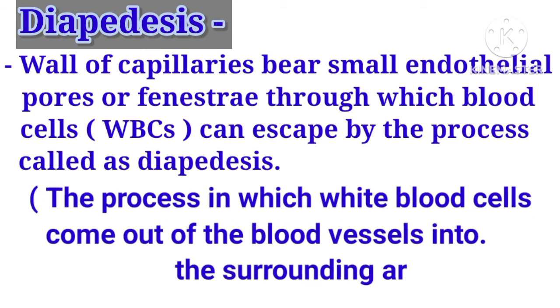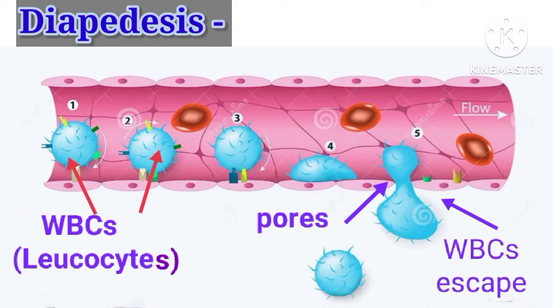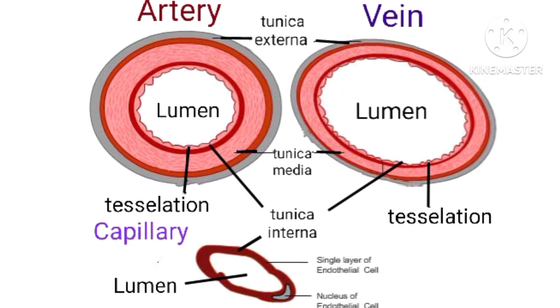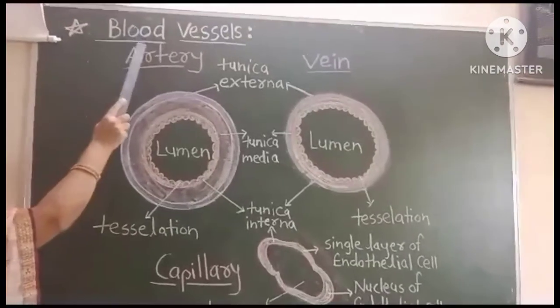Blood flows through capillaries under high pressure. The walls of capillaries bear small endothelial pores or fenestrae through which blood cells — that is, WBCs — can escape by a process called diapedesis. You can see the diagram of the three blood vessels: artery, vein, and capillaries.